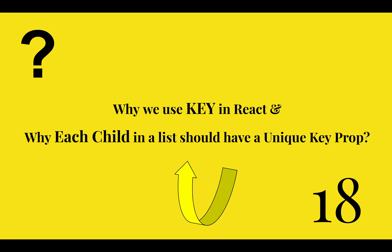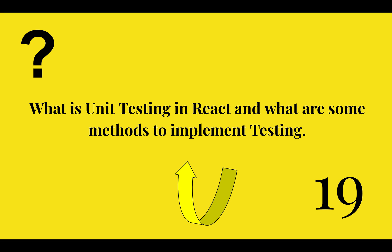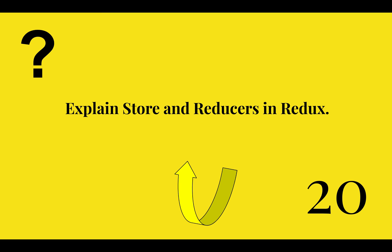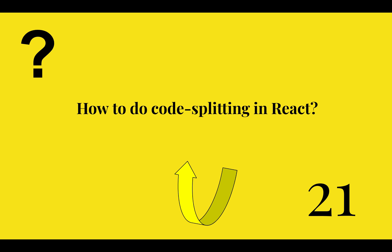Why do we use keys in React and why should each child in a list have a unique key prop? What is unit testing in React and what are some methods to implement testing? I'll be answering this question on my blog or in another video.